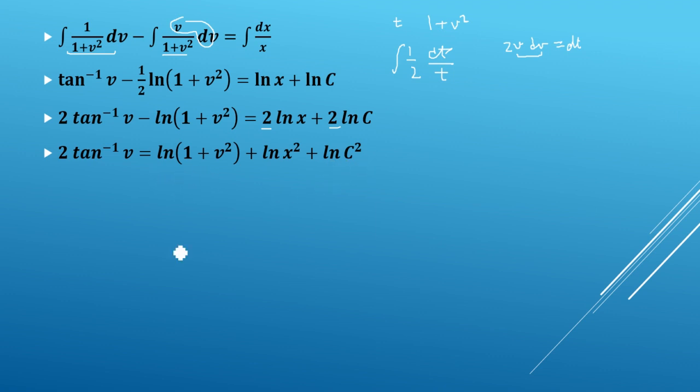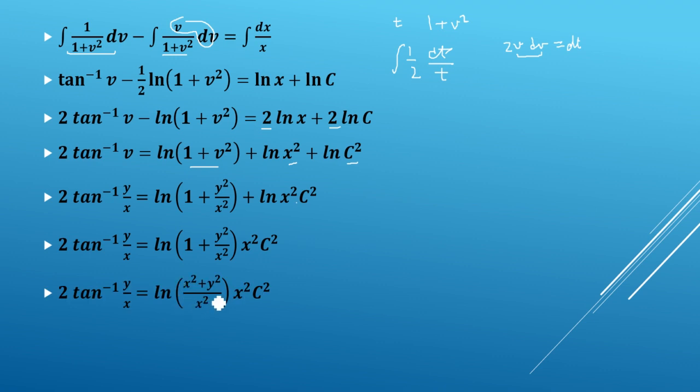Dividing because we have v dv, what is going to be 1/2 dt. This whole integration will be 1/2, and it is dt/t, which is log. So we have direct value, and integration is log x, because if we have log, then we can add log c because here c is a constant. So now I have LCM, so 2 tan inverse v - log(1 + v²) = 2 log x + 2 log c. Simplifying: 2 tan inverse(y/x) = log(x²(x² + y²)c²). So this is the solution which we have got.